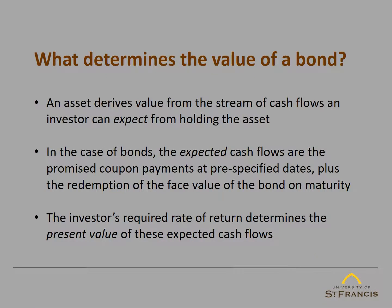As a student of finance, you know that the value of an asset derives from the stream of cash flows that an investor can expect from holding the asset. In the case of bonds, these expected cash flows are the promised coupon payments at pre-specified dates plus the redemption of the face value on the maturity date. When you calculate the value of a bond today, you are looking at the present value of the entire stream of cash flows, discounted back to the present using the investor's required rate of return.